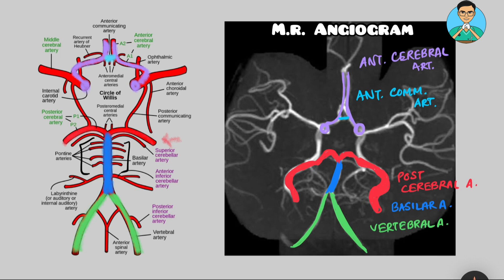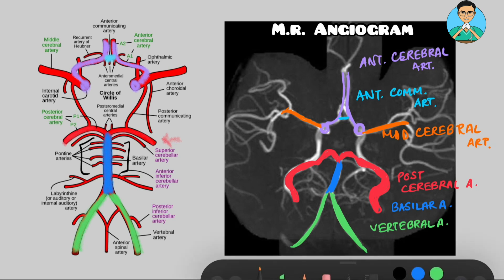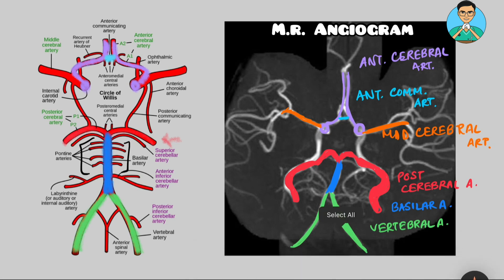This internal carotid artery also gives off the middle cerebral artery. In the schematic, it is over here — this thick branch.